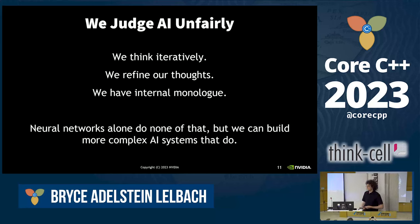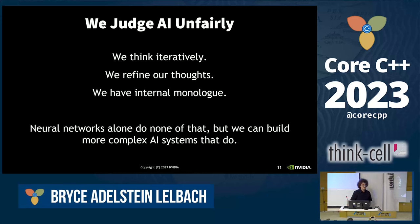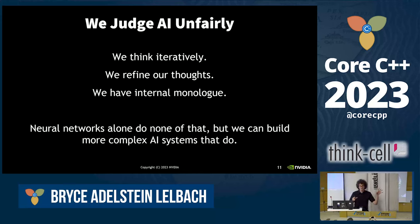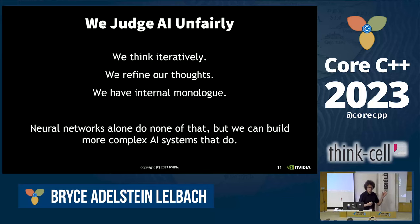If you look at things like Bard or ChatGPT's integration with web search, that's not just a single neural network. That's a simple version of this idea of a complex AI system — a neural network that has some system behind it that knows when and how to call out to the web, or when to call out to something like Wolfram Alpha to do math, which these models are not great at.